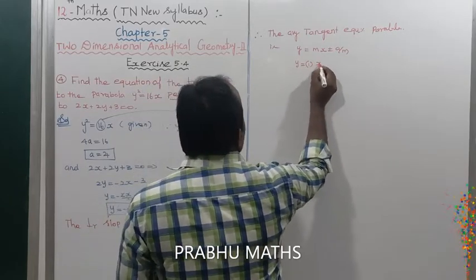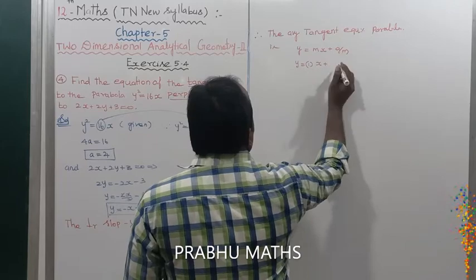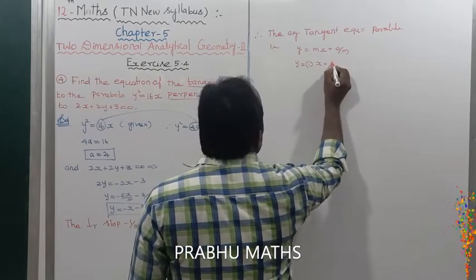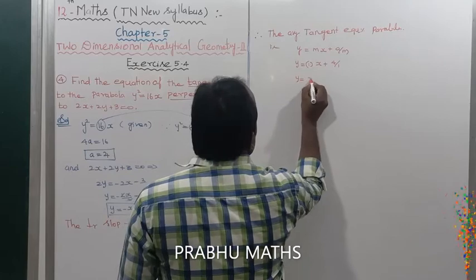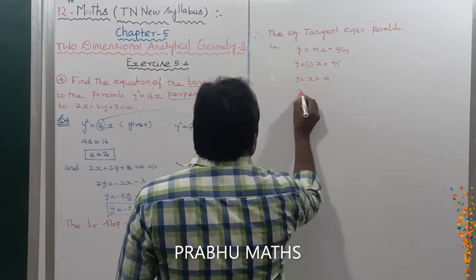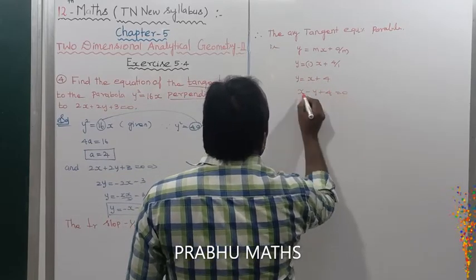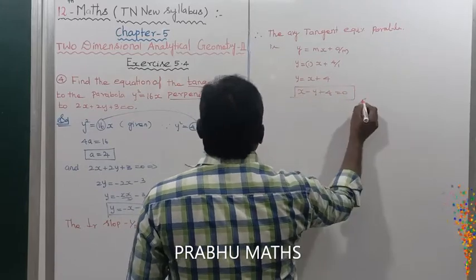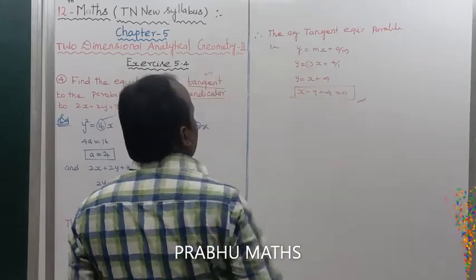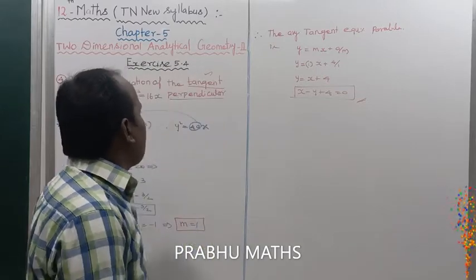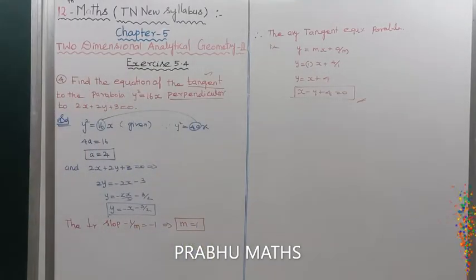Substituting into the tangent equation y = mx + a/m: with m = 1 and a = 4, y = 1·x + 4/1, so y = x + 4, which gives x - y + 4 = 0. That is the equation of the tangent perpendicular to the given line.